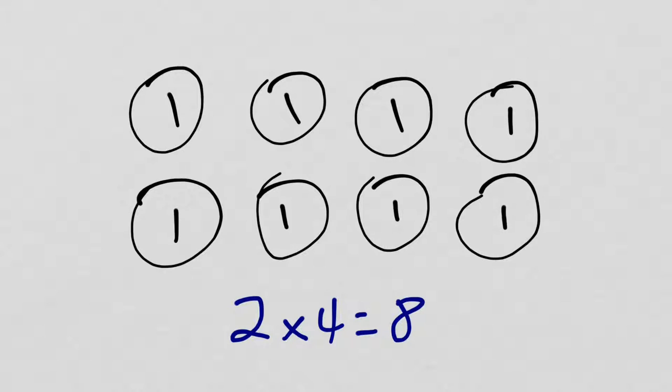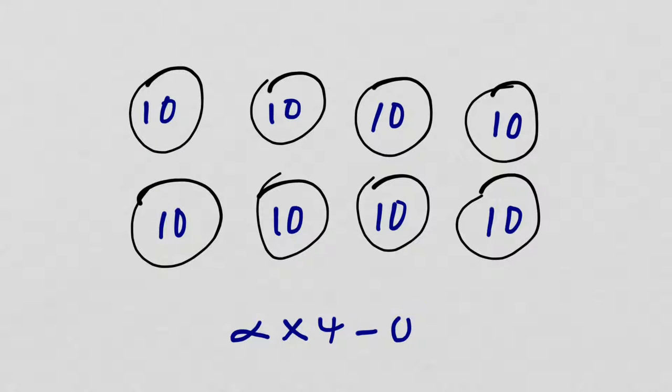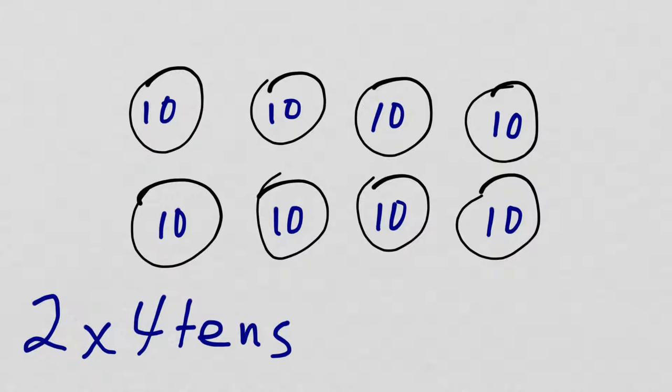Now, I'm going to make some changes to this array. So, what is it showing now? It's no longer showing 2 times 4 equals 8, because I replaced all of the 1s with 10s. So, let's get rid of that. I now have 2 rows with 4 10s in each, instead of 4 1s. Another way to write that would be to say that it is equal to 2 times 40, because 4 10s is the same thing as 40.